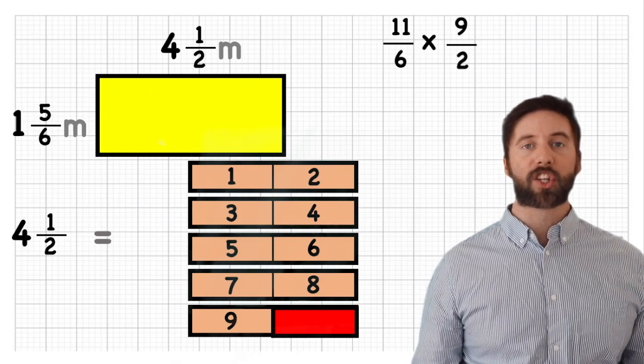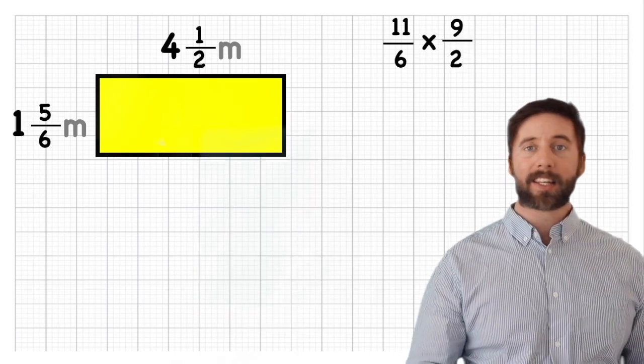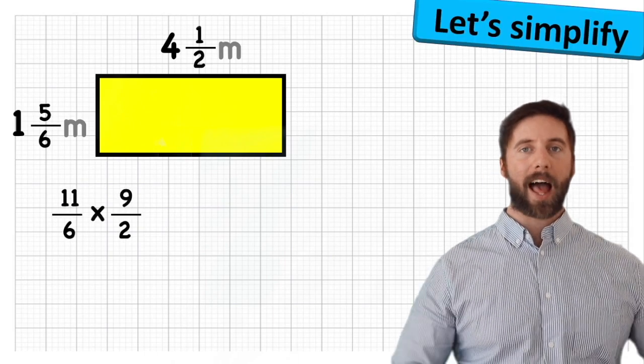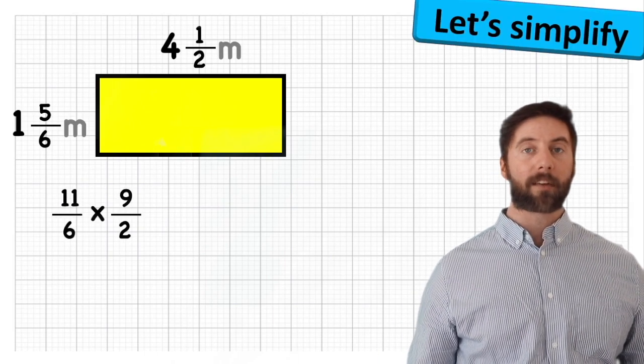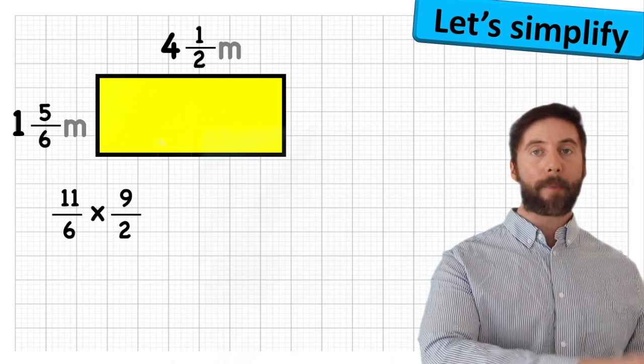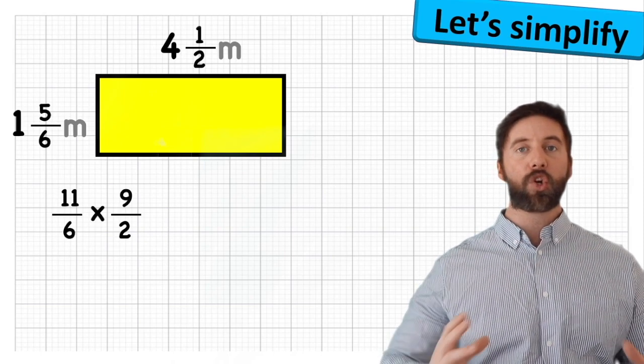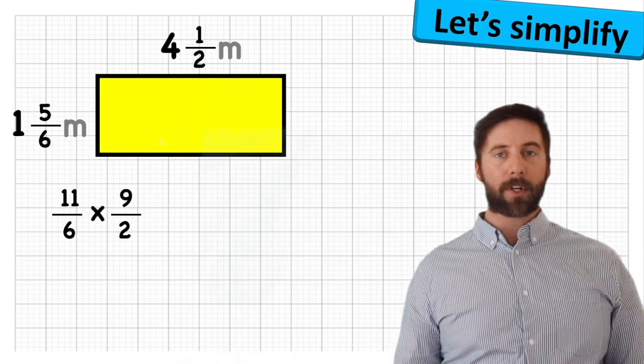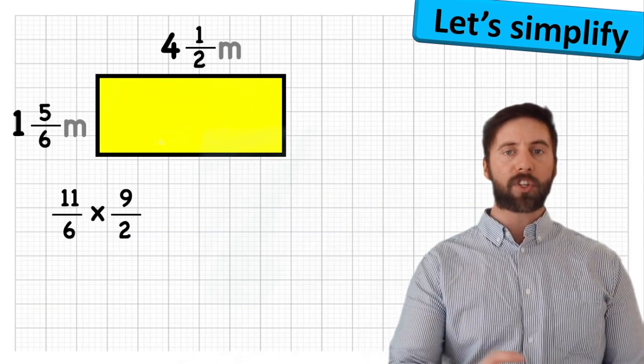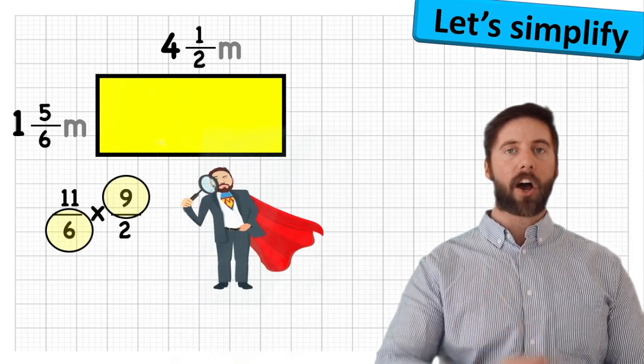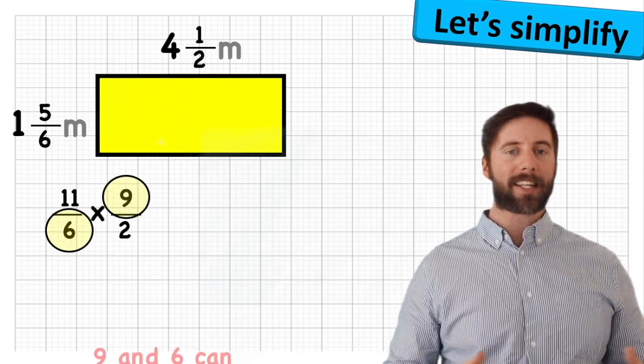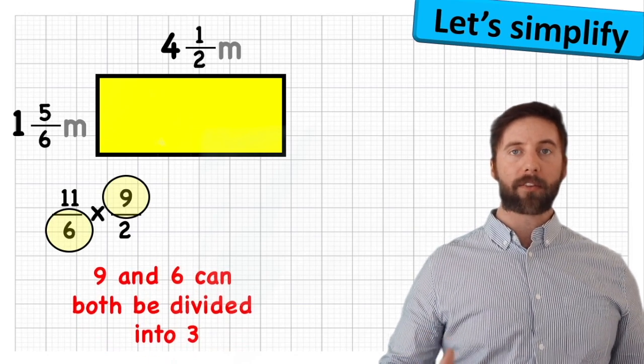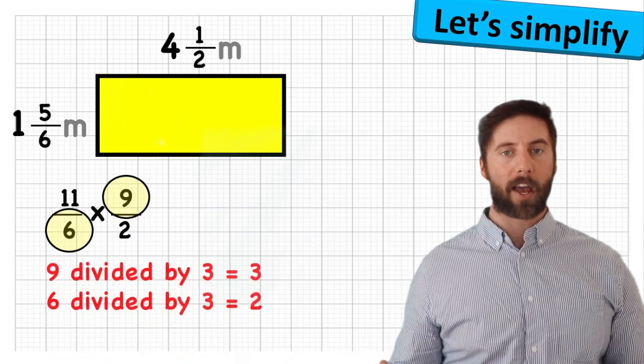So my new improper fractions look like eleven sixths times nine halves or nine twos. And that is the hardest part. If you can get a good understanding of moving from a mixed number back into the improper fraction, you are halfway there. Now, before we go ahead and multiply these numbers, we are going to try and simplify them. And I've noticed that we've got a six on the bottom row here and a nine on the top row here. And since six and nine can both evenly be divided by three, we are going to go ahead and simplify it a little bit.